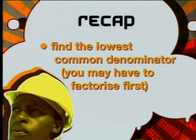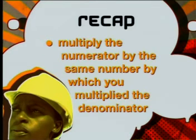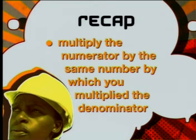Now let's go over what we've learnt about adding and subtracting fractions. Remember: firstly, find the lowest common denominator — you may have to factorize first. Secondly, write each fraction with the new denominator. And thirdly, multiply the numerator by the same number by which you multiplied the denominator. Adding and subtracting fractions is easy — you just need to keep your cool. Now for practice, let's do one last example.